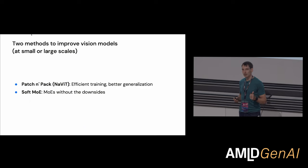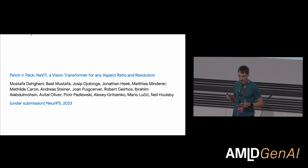So that's the motivation. And with that in mind, I'm going to present two methods to improve the efficiency, generalization, and scalability of vision models. While I've motivated it as what we want to do is go to large scale, we're at Google, actually these methods are also applicable at small scale. So I think these can be valuable for training smaller vision models as well. First is patch and pack, and the second is soft mixture of experts.